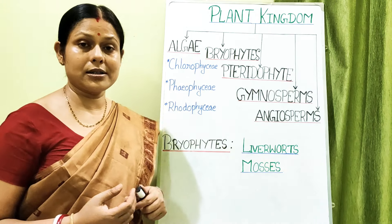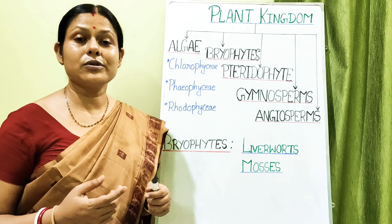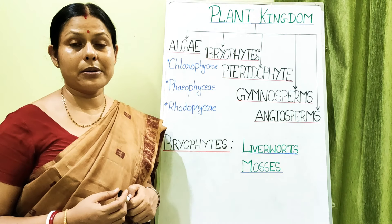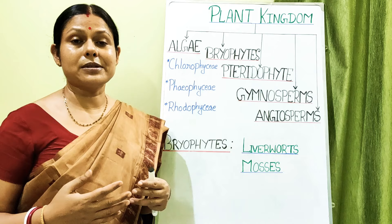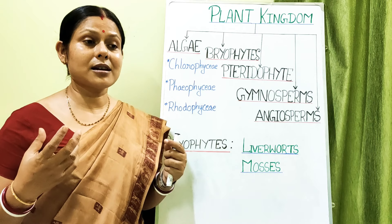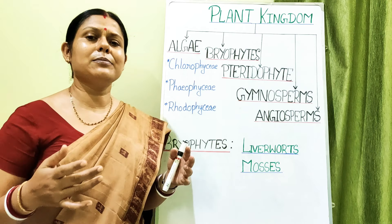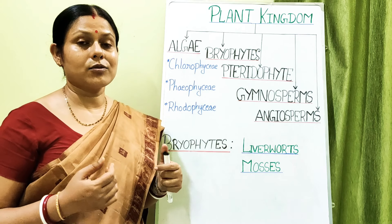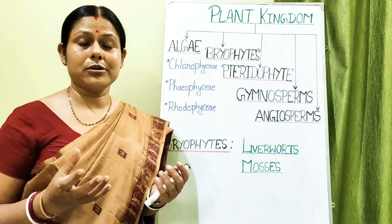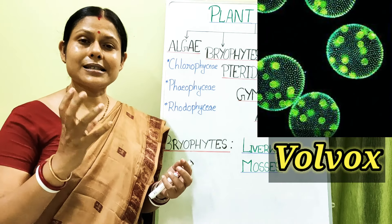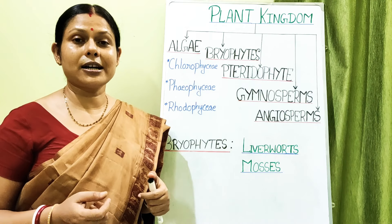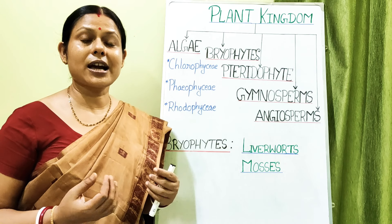The chloroplasts associated with Chlorophycean members are of different shapes — sometimes ribbon-shaped, sometimes cup-shaped, and sometimes discoid. There is also a colonial form of Chlorophycean member called Volvox, which is a colony — an assemblage of different cells in a common envelope.